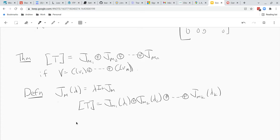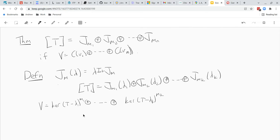And the proof is, you write the vector space V as the direct sum of these kernels. You write each of these kernels as the direct sum of cyclic subspaces. In some way, you know, however you do it.